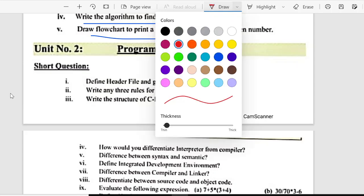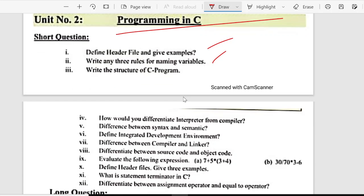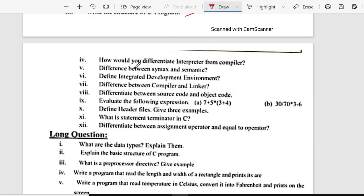And then, chapter 2, programming in C. Short questions: define header file, give examples. Number 2, write three rules for naming variables. Number 3, write the structure of C program. Number 4, how would you differentiate interpreter from compiler? Fifth is, differentiate between syntax and semantic. Sixth is, define integrated development environment. Seventh is,